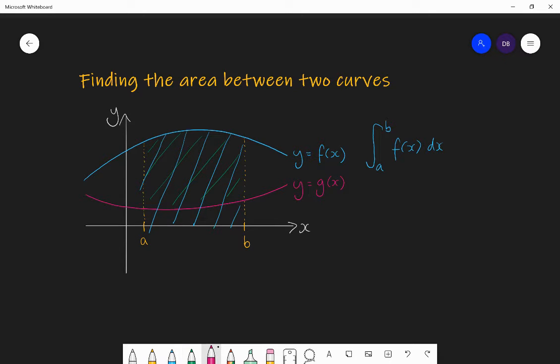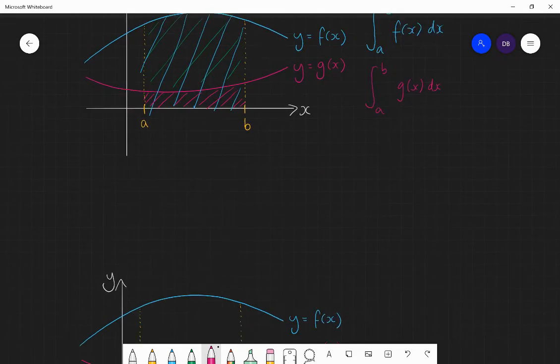And then you might think, well, then we find the area between A and B of g of x dx, which is this pink area here. And then when we subtract the two, we'll get the green area that we want. And that is an absolutely fine way of doing this. However, I'm going to show you an easier method, which doesn't require you to do two different integrals.